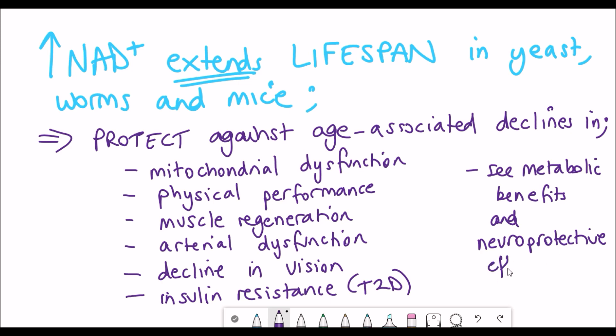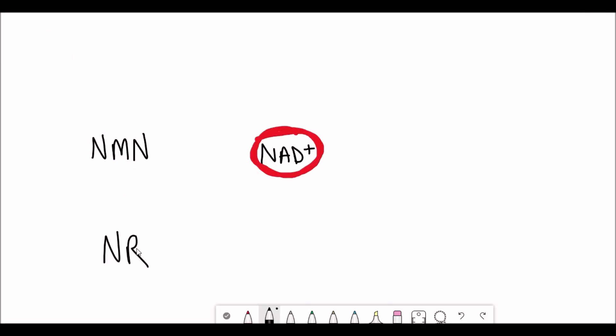But why and how? To understand this we need to go into the generation and use of NAD plus. NMN is a precursor for NAD plus. And another molecule called NR or nicotinamide riboside can also be converted to NMN and NMN can also be converted back to NR.